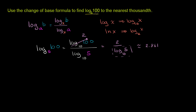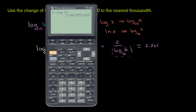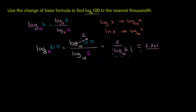We can verify this, because if I raise 5 to this power I should get 100. It makes sense: 5 to the second power is 25, 5 to the third power is 125, and 100 is in between — closer to the third power, and our answer 2.861 is closer to 3 than to 2. Let's verify: 5 to the 2.861 gives us 99.94. If I put in all the digits it would get very close to 100.